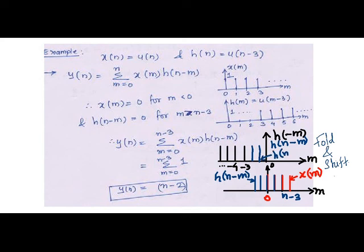As we shift it towards right and it overlaps with X of m the limit of summation as is obvious is bounded between the lower limit as 0 which is decided by X of m and upper limit of summation is decided by n-3.